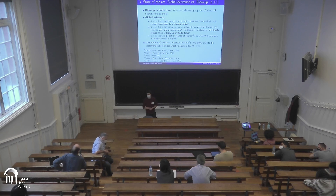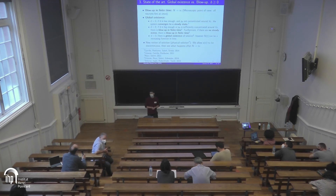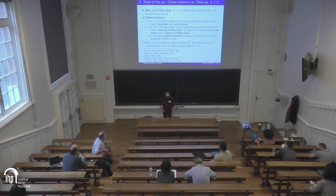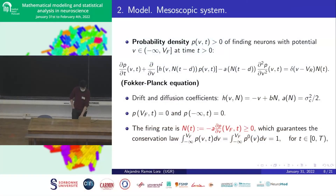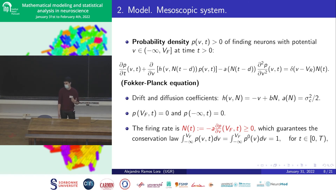An audience member asks: with deterministic tools, is it proved that there exists a solution to the Fokker-Planck equation for large B in the nonlinear system? The presenter responds: for the nonlinear system, global existence is not proved unless B is very small. For B less than zero (the inhibitory case) and B equals zero, existence is proved, but for the excitatory case with positive B, it is not proved.